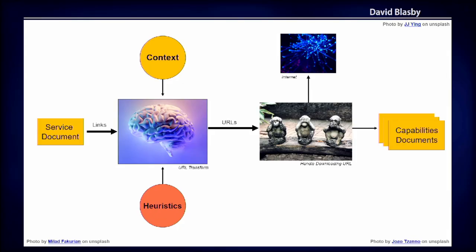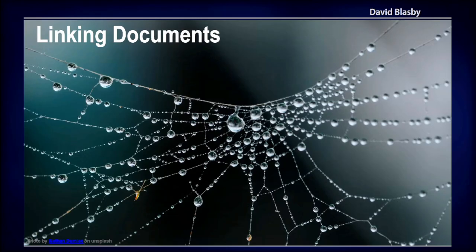Let's summarize where we are on downloading: first, you find the links to the service documents; then you use context in the record and heuristics to transform that URL into something usable; then you go to the internet and efficiently download the capabilities document, handling all the special cases; and you end up with an OGC or Atom capabilities file.